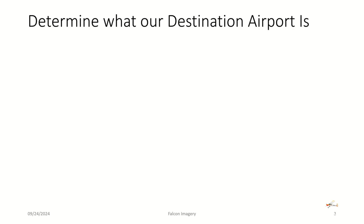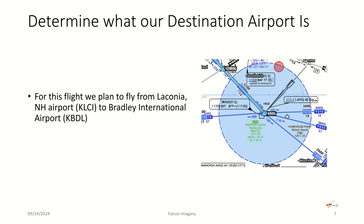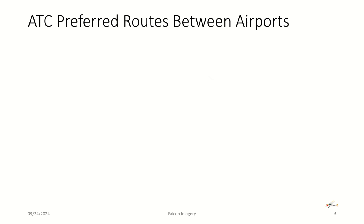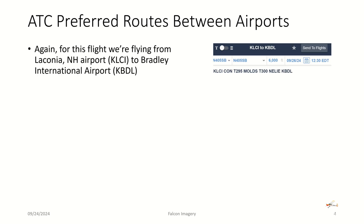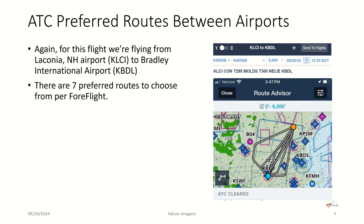Determining our destination, we're going to fly from Laconia, New Hampshire — KLCI — to Bradley International Airport, Bravo Delta Lima. Next, we want to look at our ATC preferred routes between the airports. We're going to select a route that is preferred or more recently provided by ATC for others flying that route. There are seven preferred routes I've seen in the particular plan I put together to fly from Laconia to Bradley.